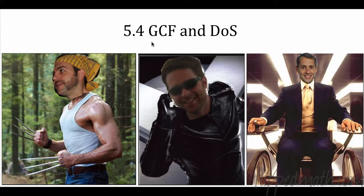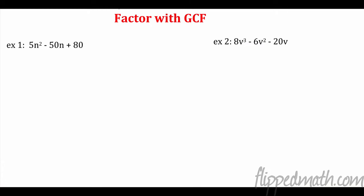So we're going to look at Greatest Common Factor and then a trick with Difference of Squares. The first thing we're going to do is talk about GCF — this is something you've definitely done in the past. When we have a common factor between 5n², 50n, and 80, we have to take out the greatest common factor. I always find the lowest factor — here it's a factor of five — and write down all factors of five, wanting the biggest number that goes into all of these.